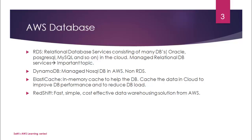ElastiCache is the in-memory cache that helps the database. What do we mean by in-memory cache? It caches data on the cloud to improve database performance and reduce the database load. Popular queries and their results are stored in ElastiCache, so if you run those popular queries again, ElastiCache will provide you the results directly. This greatly improves DB performance and reduces DB load.